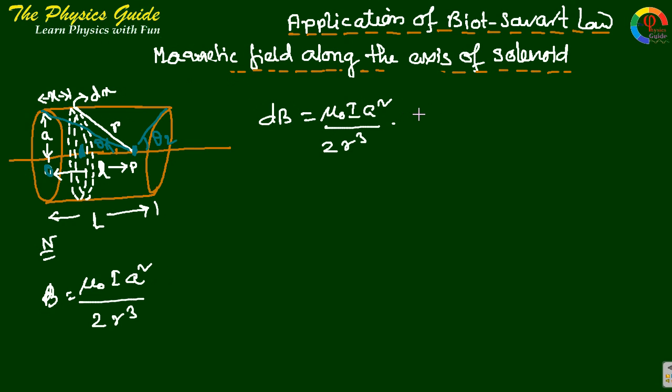Number of turns equals dx times number of turns per unit length, which is dx times capital N by L. So this is the number of turns in dx. The magnetic field equals dB equals mu0 I A squared N by 2L dx.